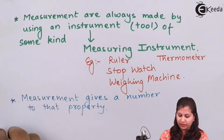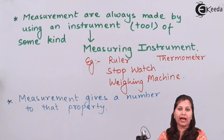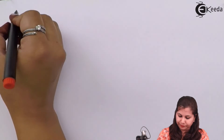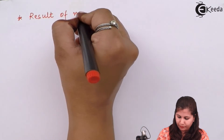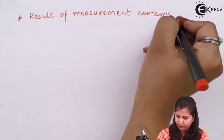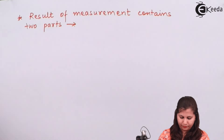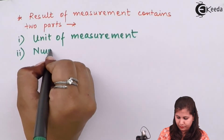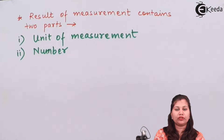Whenever we do any type of measurement, we get a result. If we are measuring a property using a measuring instrument, that instrument gives us the result. Whenever we express the result of a measurement, it will contain two parts: one is the number, and the second is the unit of measurement.